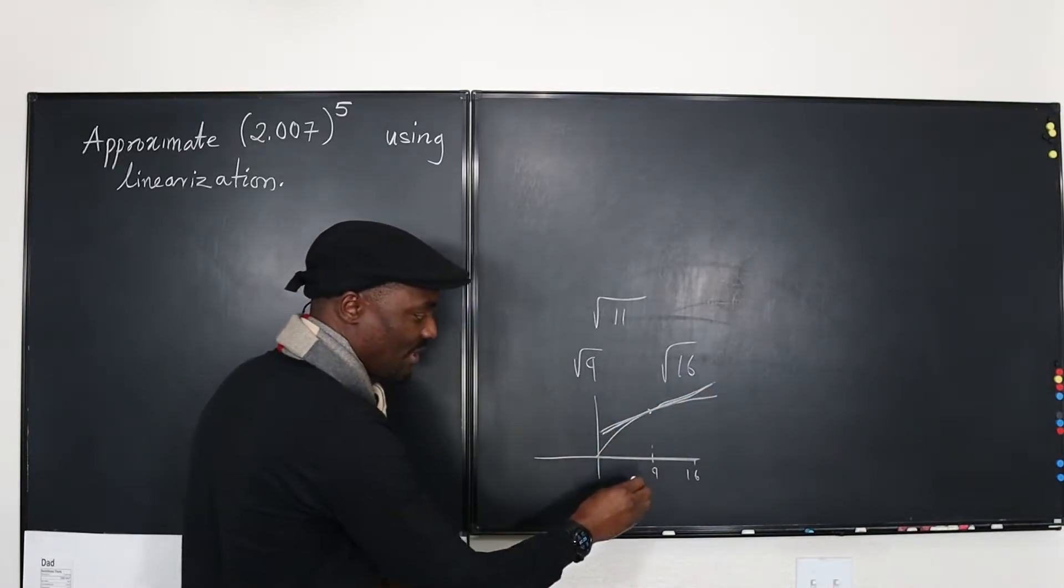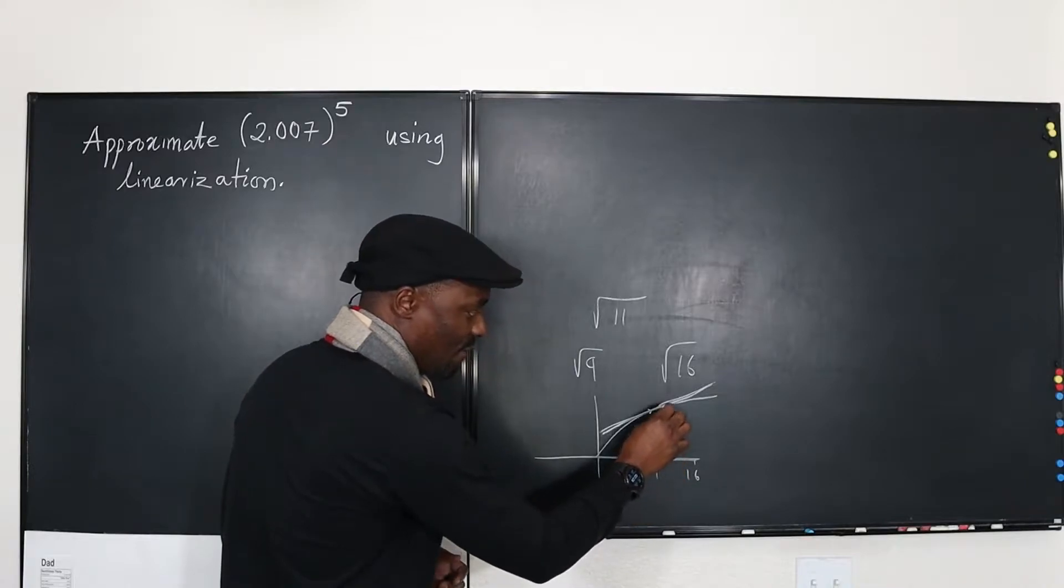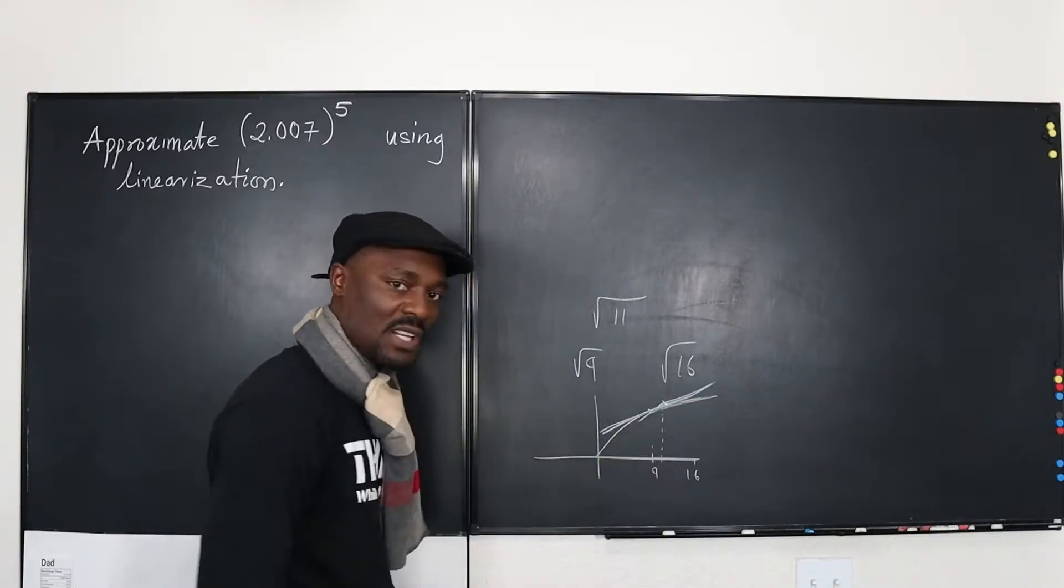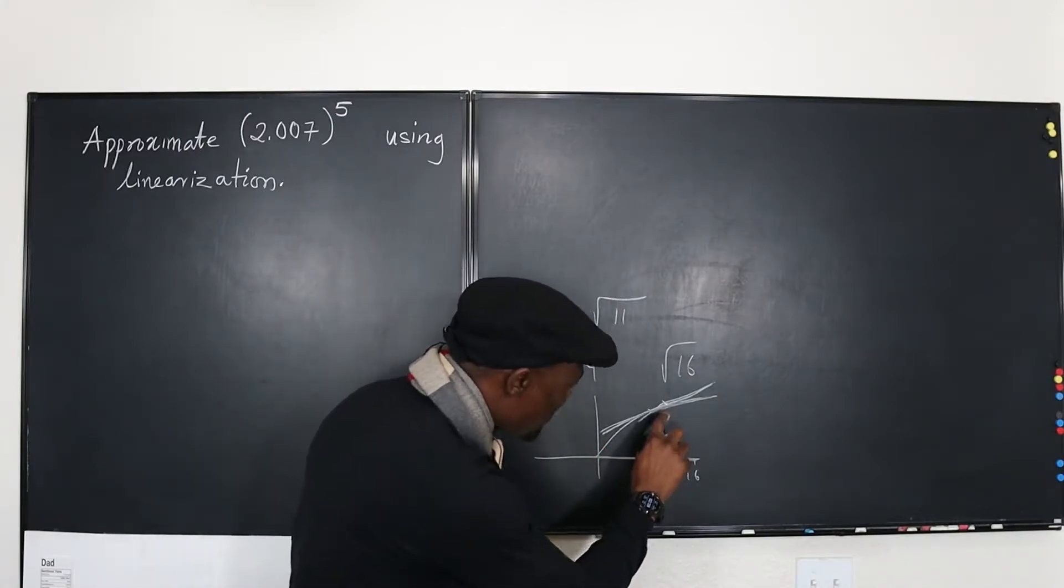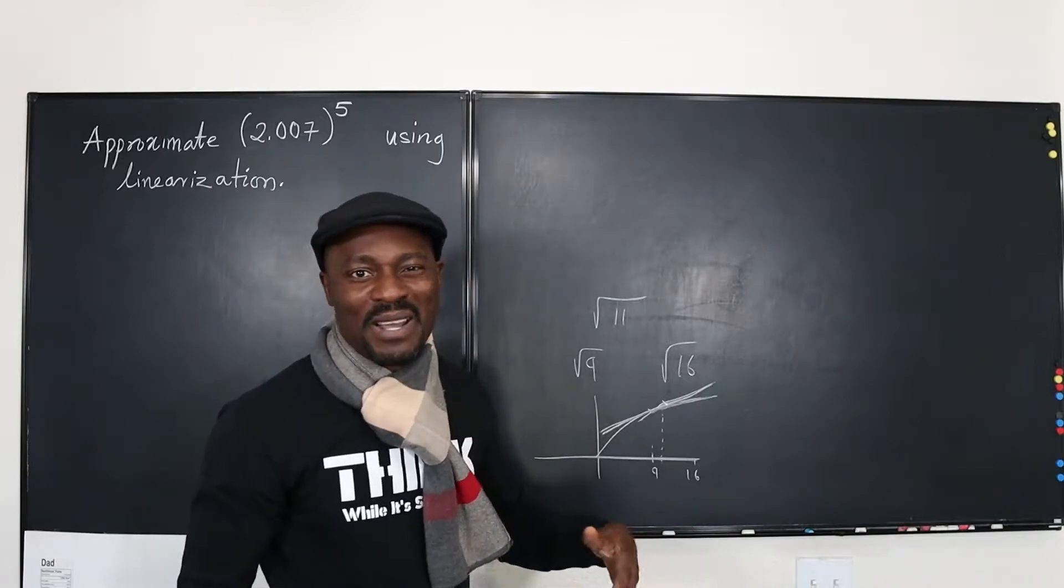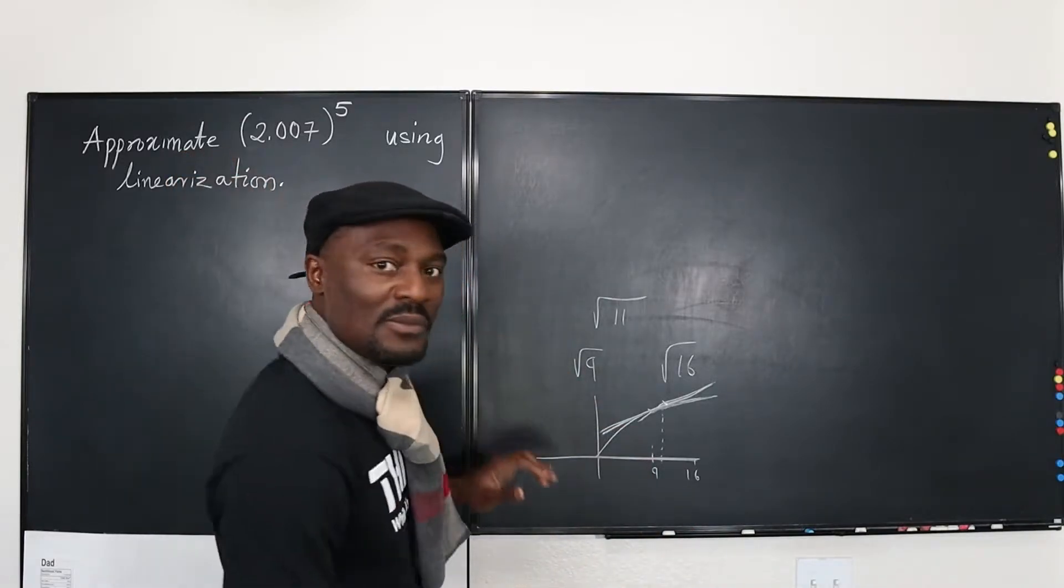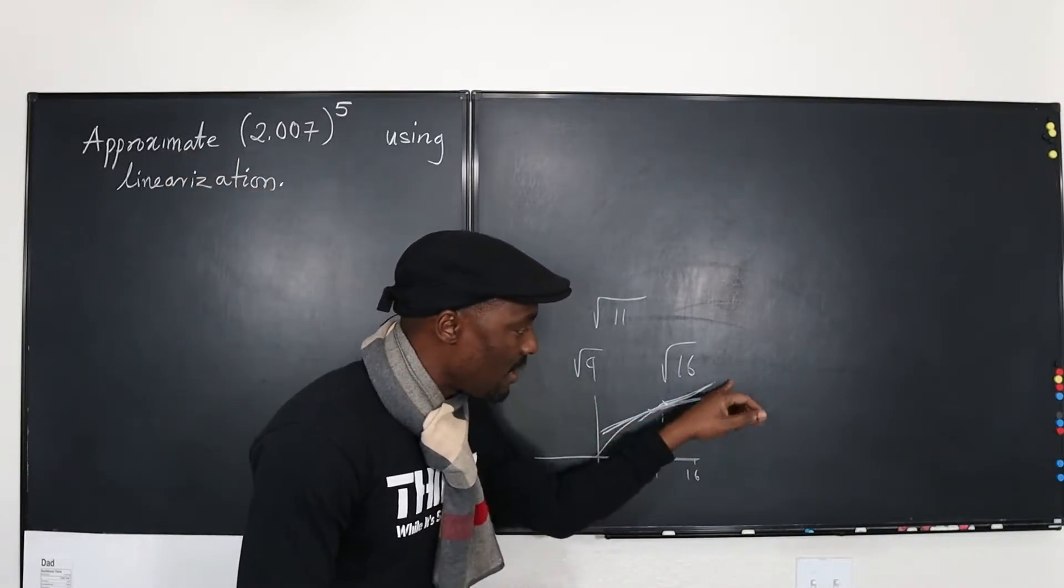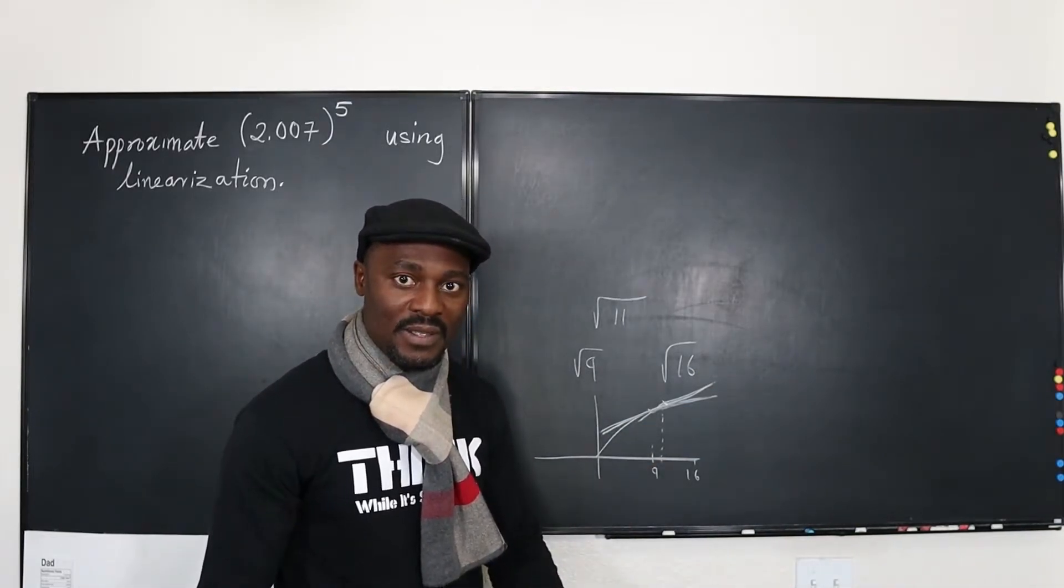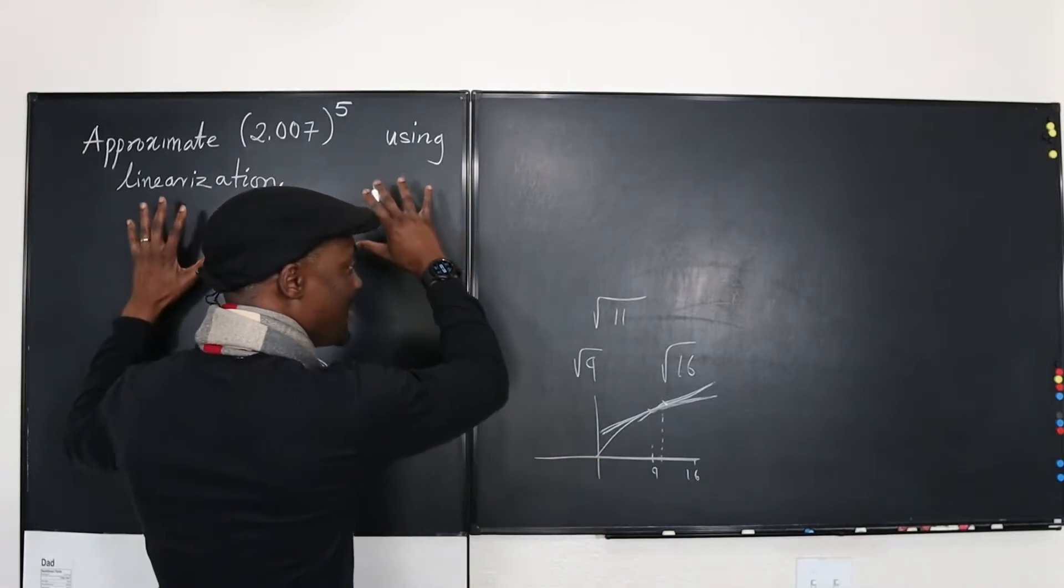And then I'm going to say at 11, instead of me using the square root function, I'm going to use this straight line instead. I know my answer will be slightly above what I'm supposed to get as the actual answer, but it's called approximation. So when you convert a curve into a straight line, you have linearized the curve.